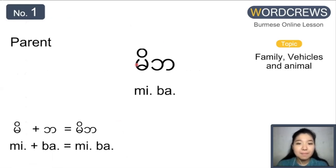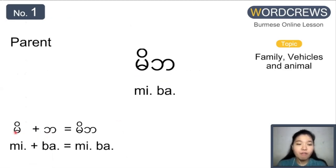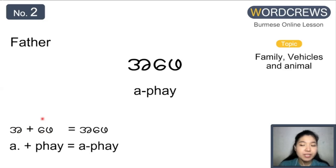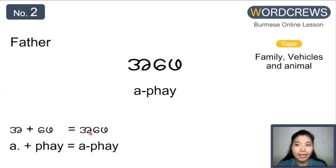The first word is mi pa. If we differentiate it, this is mi and pa. Mi is already the combination form of the ma alphabet and the i consonant, so it's mi. And this is the pa alphabet. So mi pa. Next one is father. Father is a pa. So this one, let's differentiate: this one is a — it's the alphabet. This one is the combination form, so pa. But we pronounce continuously and it becomes a pa.